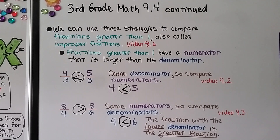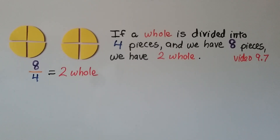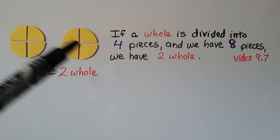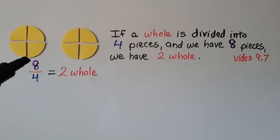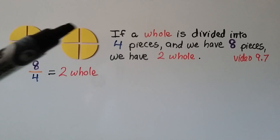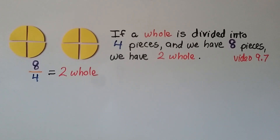If a whole is divided into four pieces like this circle, and we have eight pieces, that means we have two whole circles. Eight-fourths — it's split into four pieces, but we have eight of them, so we could take those eight pieces and make two whole circles. Eight-fourths is equal to two, or two whole.